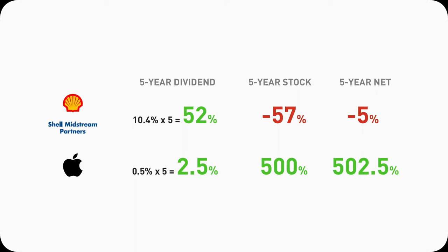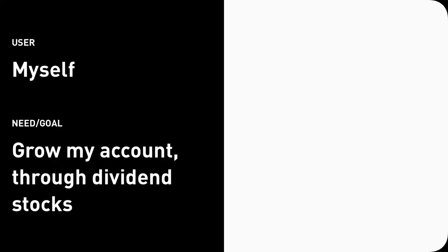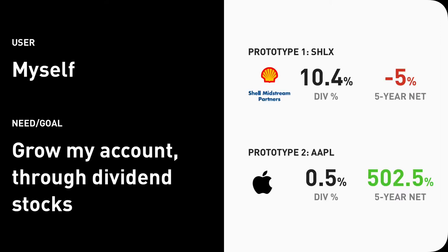So looking back, what are our goals? We want to grow our account by investing in dividend-paying stocks. We have two prototypes tested — SHLX and Apple. With Prototype 1, SHLX pays a very high dividend of 10.4%, but it gives us a negative 5% return over 5 years. It does not help grow my account — absolutely not helping achieve my goal. Apple, on the other hand, has a very low dividend yield, but it does help us grow our account. So if I have to choose between these two, of course I'll pick Apple. This is just one example of why high dividend yield is a trap.